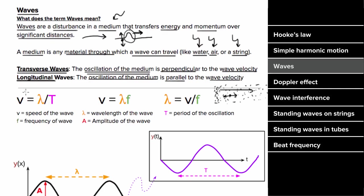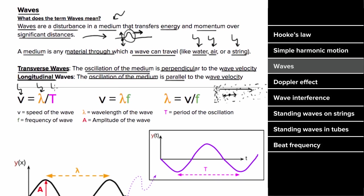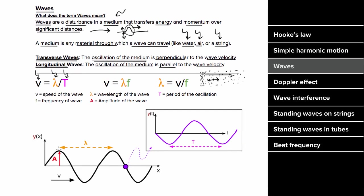For every type of wave, the speed of the wave disturbance equals the wavelength divided by the period. In other words, if you watched a wave crest, that crest would move one wavelength every period. Since speed is distance per time, the speed of the wave crest is one wavelength per period.